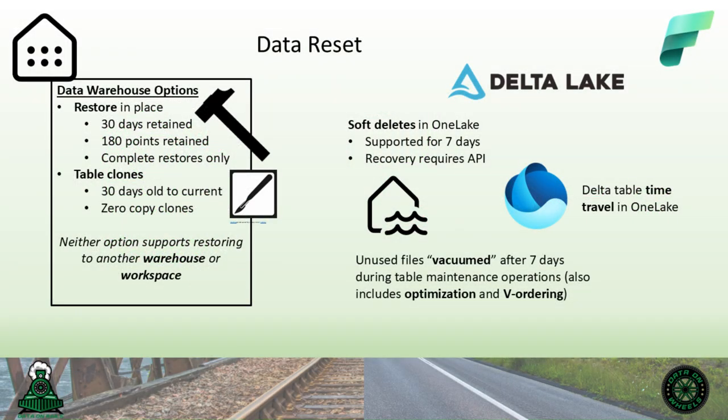I did not have a good name for this topic, so I called it data reset. I am referring to those situations where something bad happens to your data and you need to roll back or recover data in the lake house or the data warehouse. These issues are commonly caused by mistakes by developers and end users. Developers cause issues when they roll out a breaking change accidentally or remove data with a bad SQL statement. Sometimes it's caused by mistakes from the user community. Let's walk through some of the options available in Microsoft Fabric to help you recover from these scenarios.